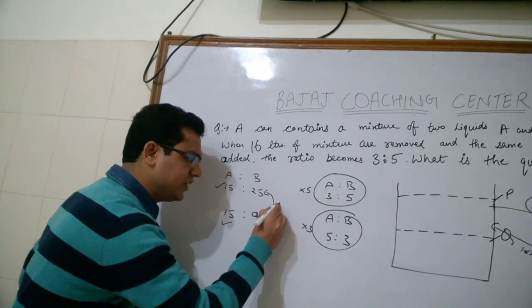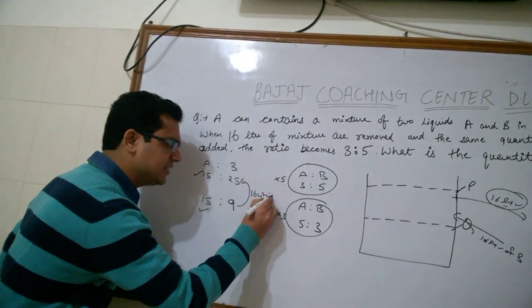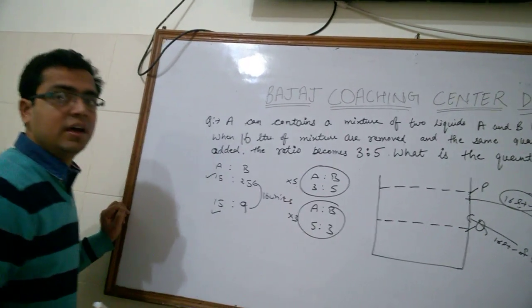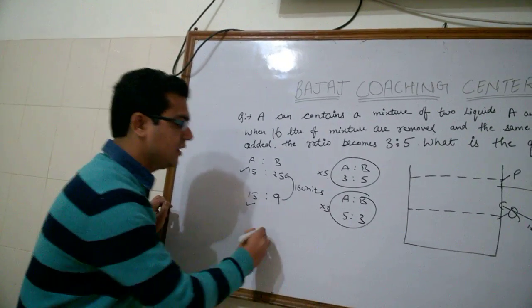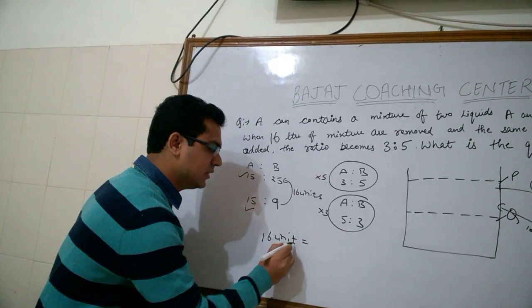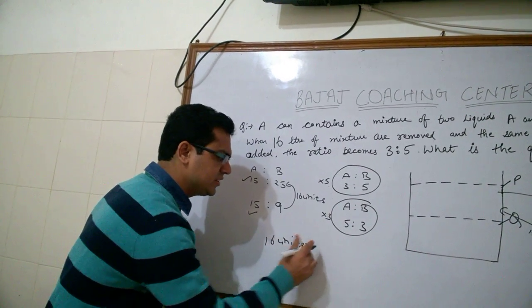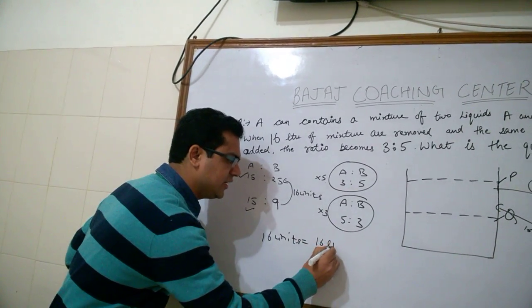Means in ratio, it is increasing by 16 units. And in actuality, you are adding 16 litres. Means 16 units is corresponding to 16 litres.